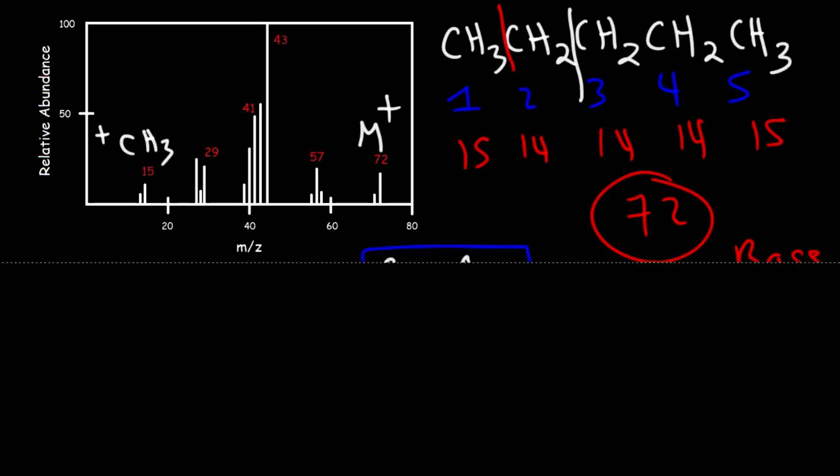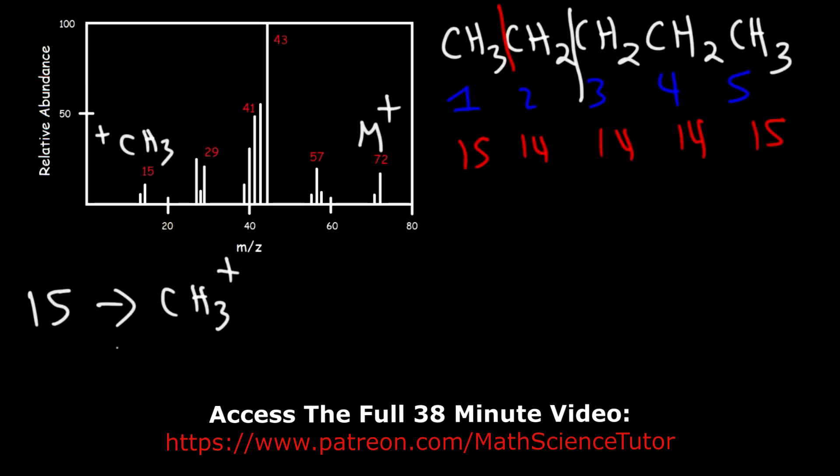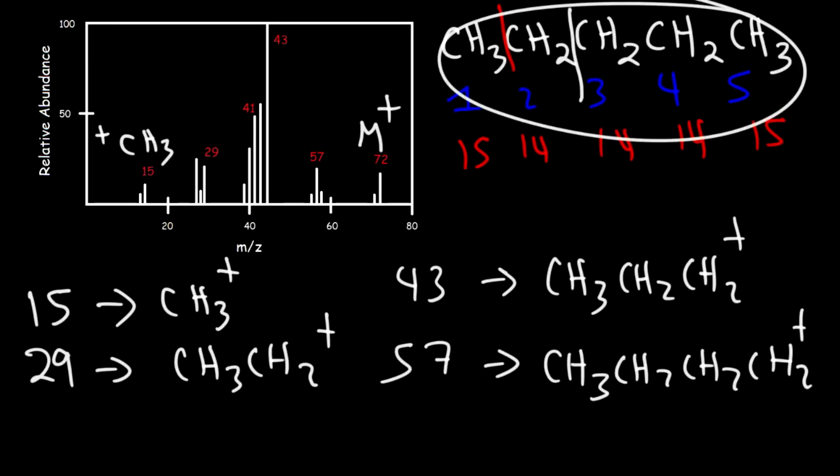Let's clear away some of the stuff that we have on the board. At this point we've identified all the peaks. The peak at 15 corresponds to the methyl cation, the peak at 29 corresponds to the ethyl cation, the peak at 43 corresponds to the propyl cation, and the peak at 57 corresponds to the butyl cation. At 72 it's the original compound that lost only one electron.